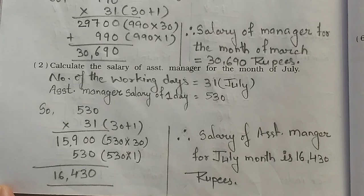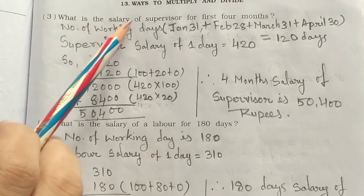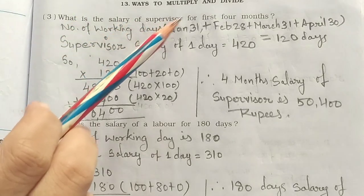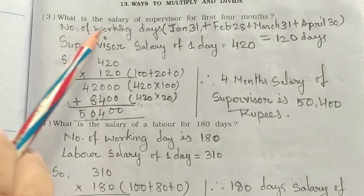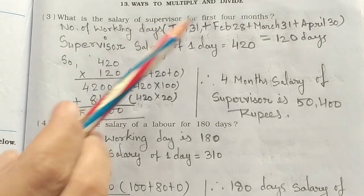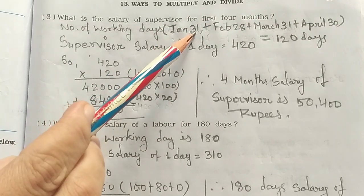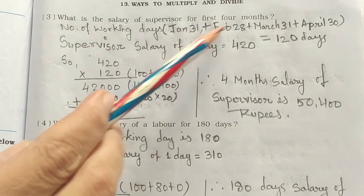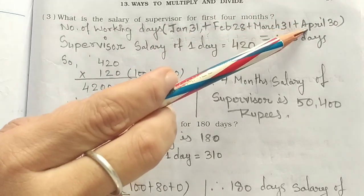Question 3 is on page 181 of your workbook. What is the salary of the supervisor for the first four months? The first four months are January, February, March, and April — with 31, 28, 31, and 30 days respectively.